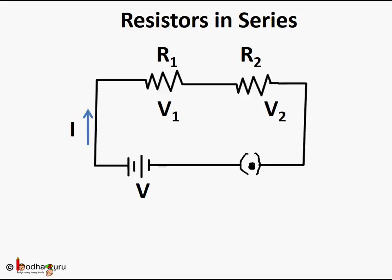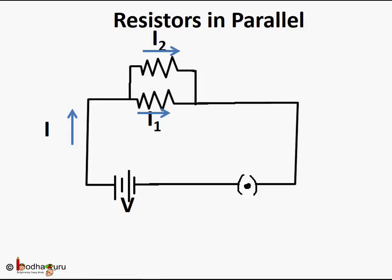Hello friends. We learnt in our earlier lessons that when resistors R1, R2, R3 etc. are connected in series, the total resistance of the circuit R is equal to R1 plus R2 plus R3 and so on. The same current I flows through all the resistors in a series circuit, whereas different potential differences V1, V2 are seen across each resistor based on its resistance value.